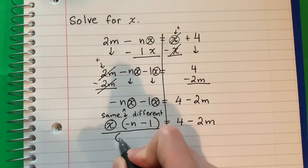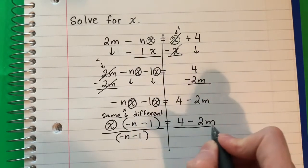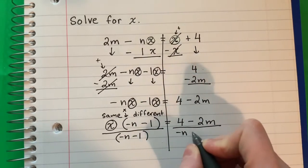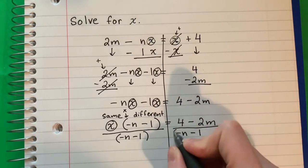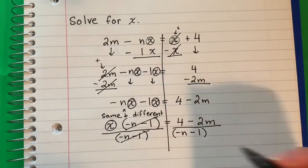I'm going to copy down parenthesis, negative n minus 1, parenthesis. Copy. Divided by negative n minus 1 in parenthesis. I'm going to cancel this.